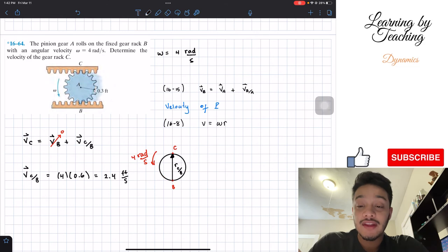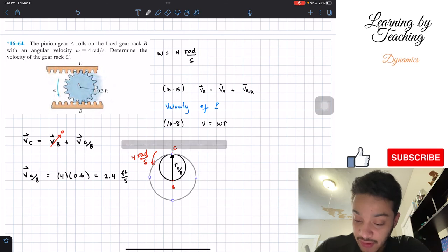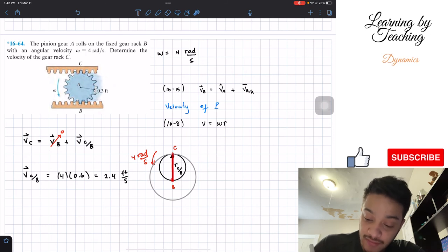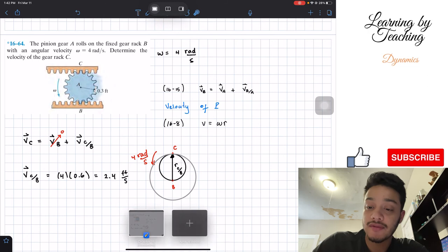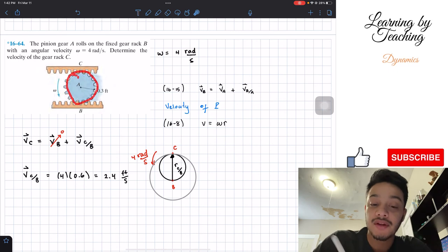Well, you can think of this problem as basically the disk is twice the radius. This is actually our real radius that we're looking at because we're looking from B all the way to C. That's how I like to think about this problem so you don't get confused why the radius is the diameter, the actual diameter of this pinion gear A.